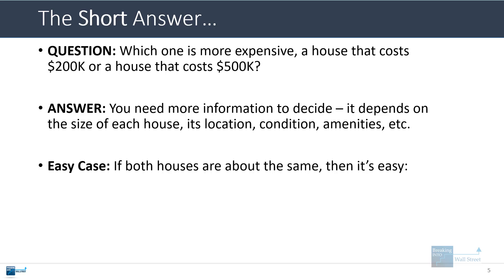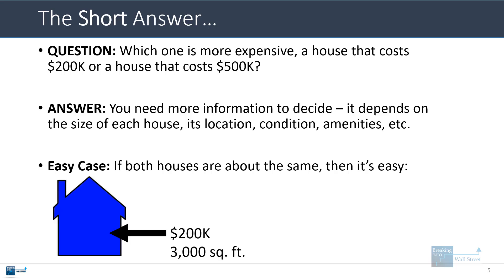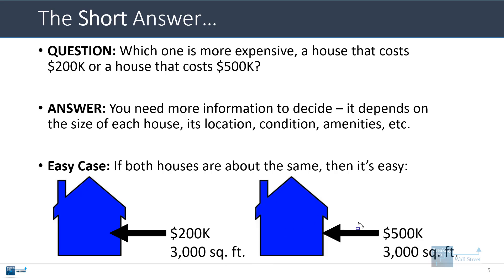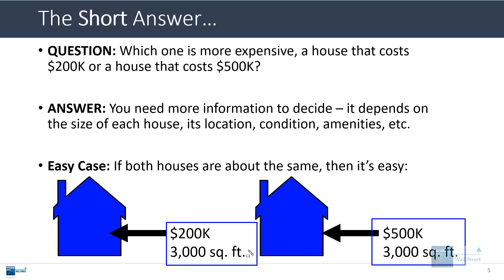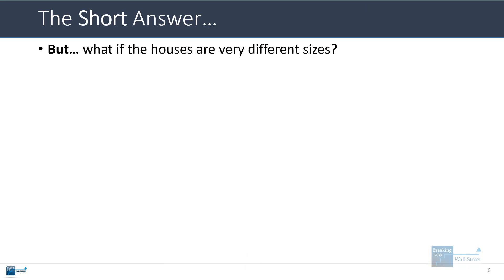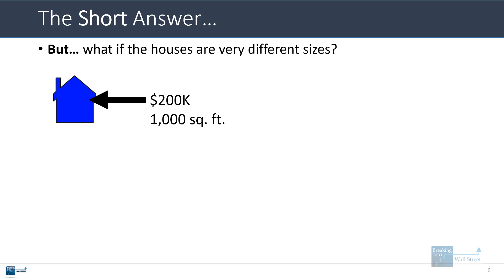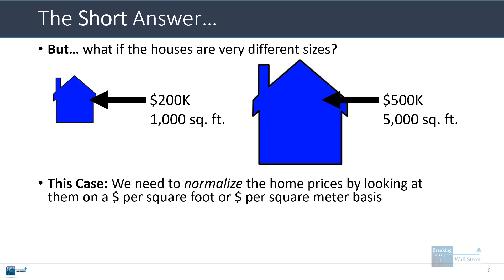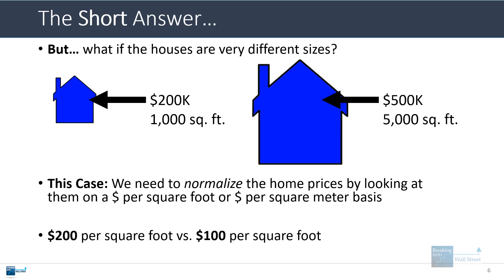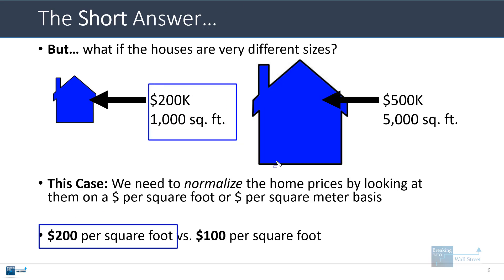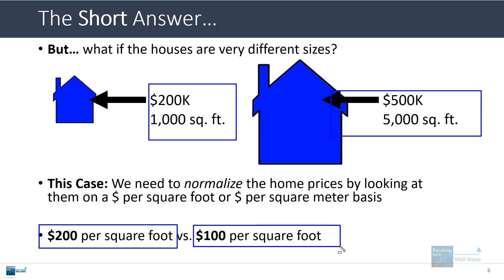If both houses are exactly the same — say both are 3,000 square feet — then it's obvious that the $500,000 one is more expensive because you're paying more on a per square foot basis. But if the $200,000 house is 1,000 square feet and the $500,000 house is 5,000 square feet, you have to look at it on a per square foot basis. The first is $200 per square foot, while the bigger house is only $100 per square foot — so you're getting more for your money with the larger house.